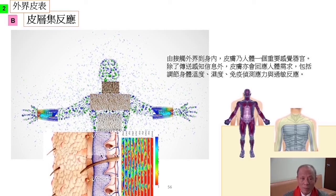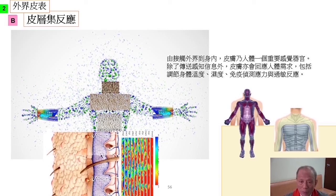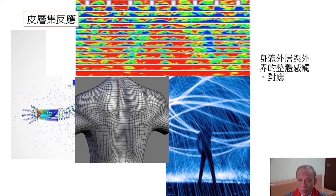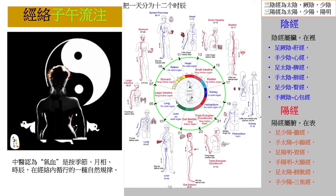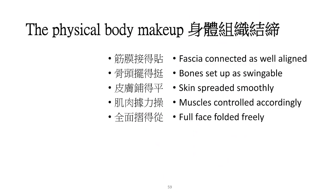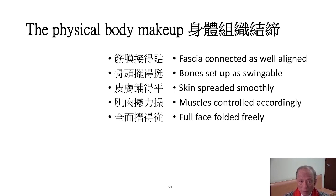The skin and border tone of the body is related to the whole outside world with a collective response. The cortical collective response, because it is in contact with the outside world and the body environment, manifests feelings and transmits a lot of cues and information. Knowing the needs of the body, it plays an important role in regulating the outer and inner temperature and humidity, and how to monitor immune stimulants and substrates, allergic reactions, etc. The outer layer of the body and the outside world, the overall sense of touch, are very close to each other. In Chinese medicine, the whole body including the border tone, collectively in the 12 meridians, are related to the seasons, the sun, the moon, the times, or the laws of nature, and qi and blood.